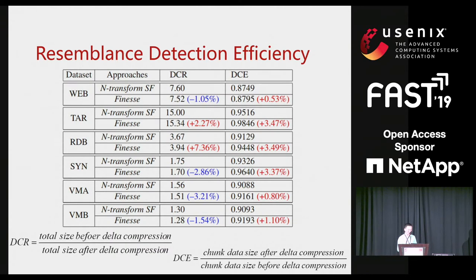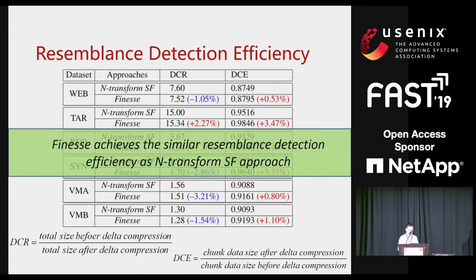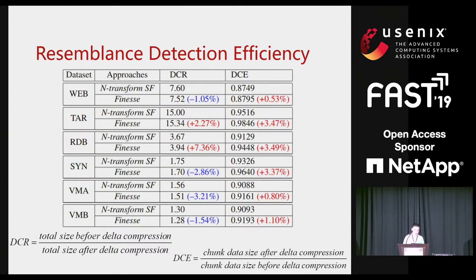DCE measures the similarity degree of chunks detected by the super feature approach and the PHILESS approach — higher is also better. Generally, PHILESS achieves similar redundancy detection efficiency as the n-transform super feature approach. For the DCE metric, most of the time PHILESS performs better than the n-transform super feature approach. For the DCR metric, sometimes PHILESS is better and sometimes the traditional approach is better, but the difference is very, very small.